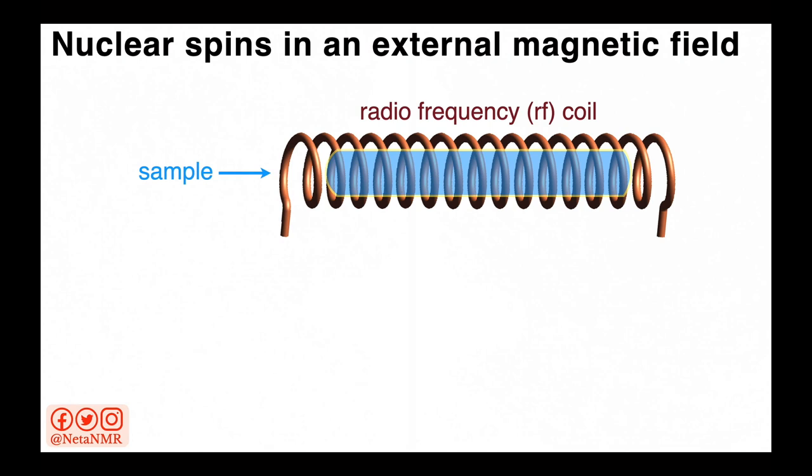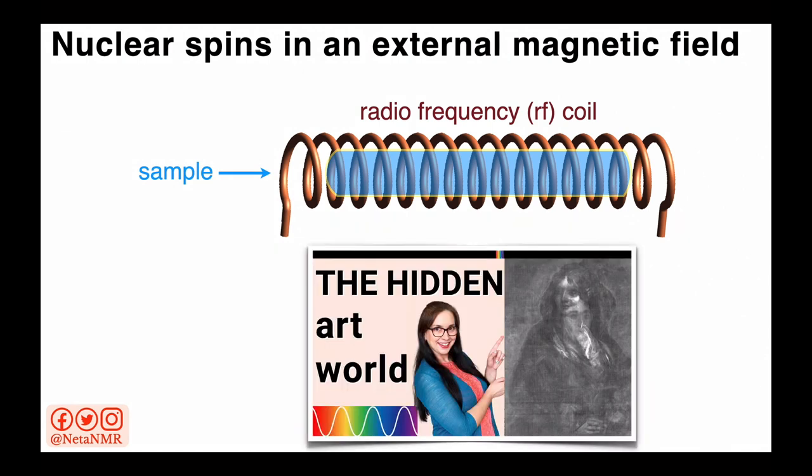Now it's time to remember that when we place the sample in the magnet, it is also inside another, smaller coil, which I mentioned before can be used to send radiofrequency pulses into the sample. And we've seen in a previous video how the radio portion of the electromagnetic spectrum is the electromagnetic radiation with the lowest energy.